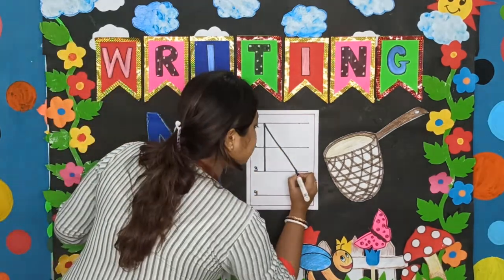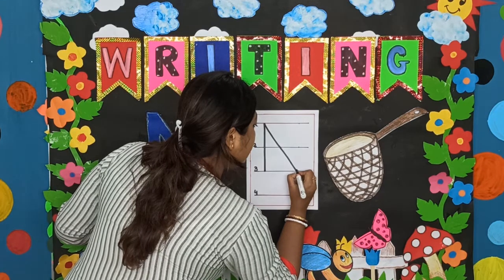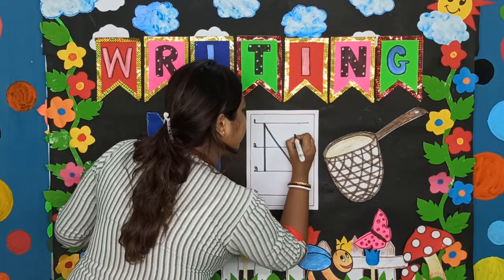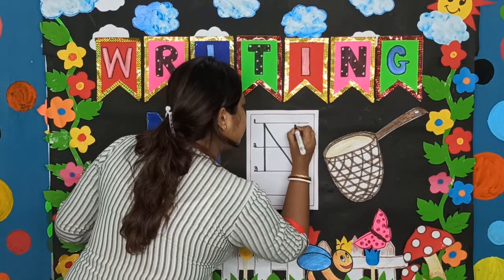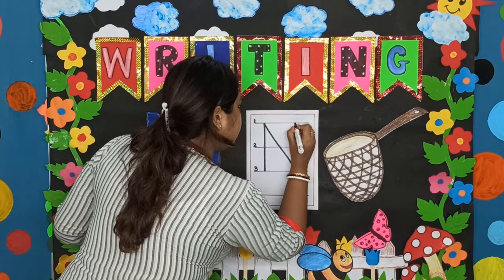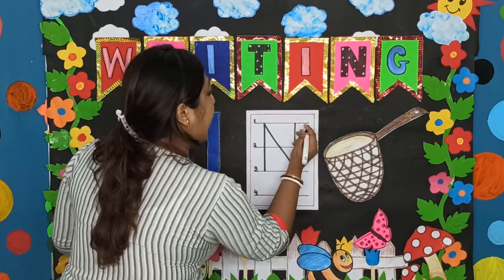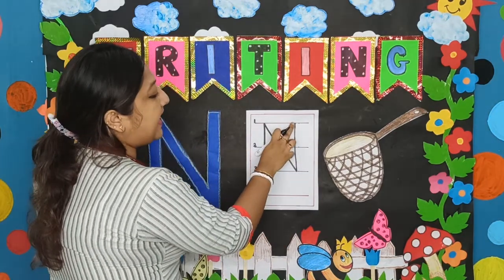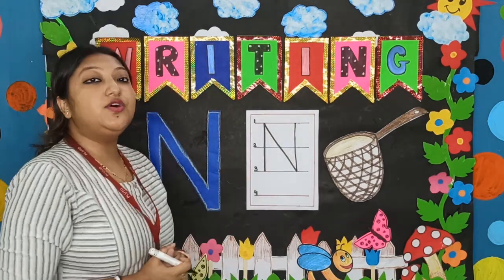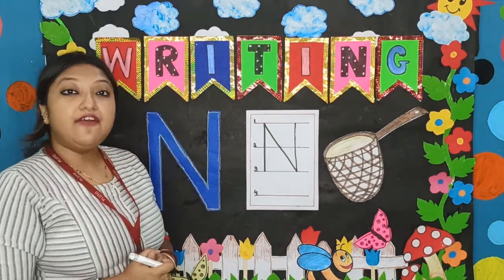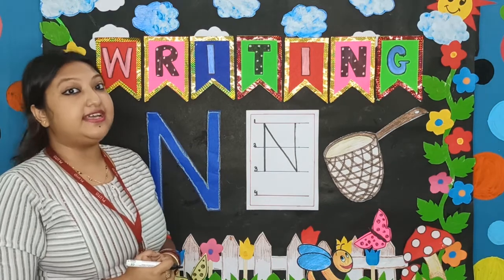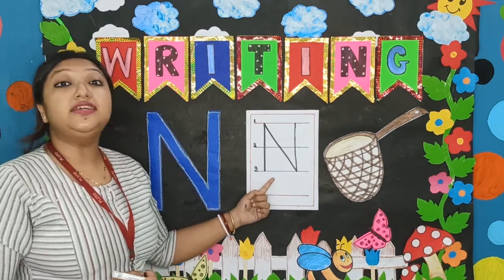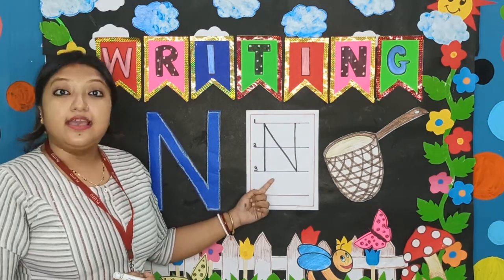So let's start. Now we are drawing the standing line. Okay, children. And as we have touched the first line, we have completed our letter N. This is the letter N.